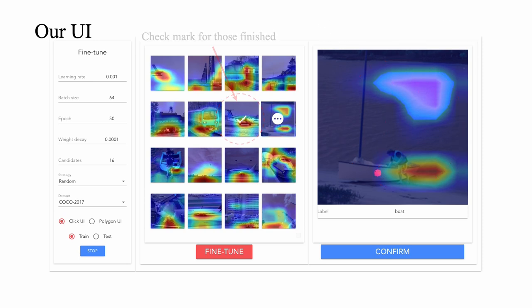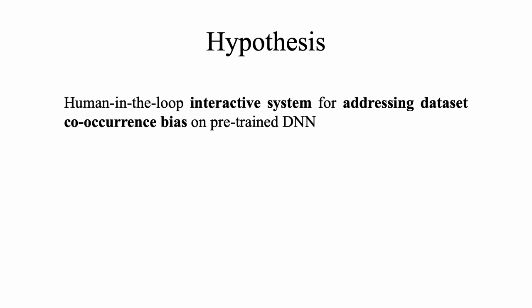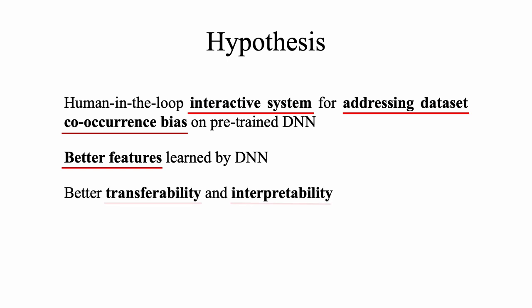Our hypothesis is that we proposed a new human-in-the-loop interactive system for addressing dataset co-occurrence bias on pre-trained DNN, can obtain better features, and the fine-tuned networks has better transferability and interpretability.